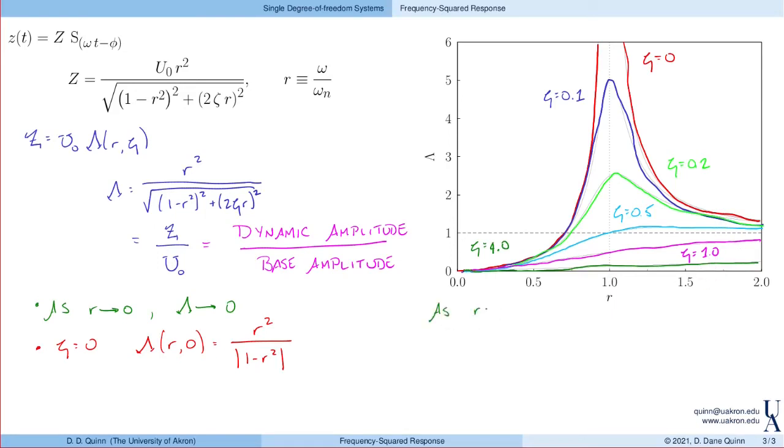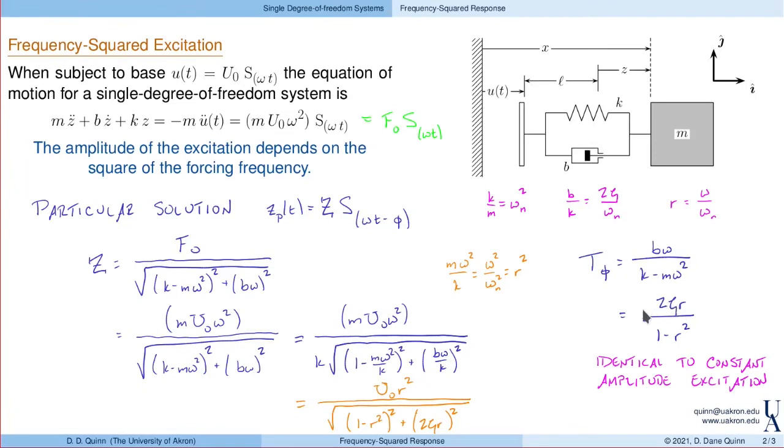As r increases, all of these begin to approach 1. As r goes to infinity, we see that lambda approaches 1. And recalling our phase shift given by this expression, as r increases, the phase shift actually approaches pi.